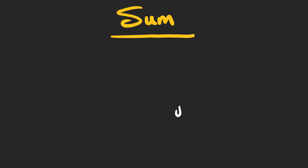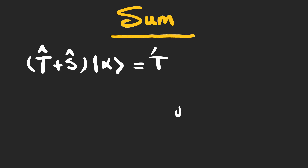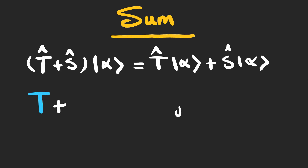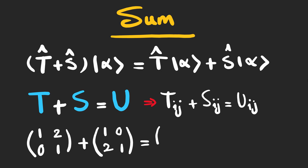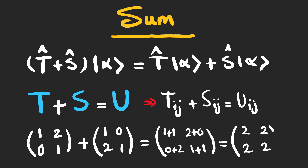The sum of two linear transformations is simply adding the matrices representing them — you just add the corresponding elements to get the result. For example, for these two square matrices, we add the corresponding elements and here is the sum.